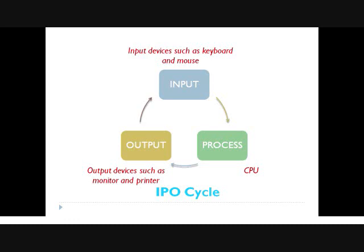For example, suppose I say '2 plus 2' — that is the input. You hear it through your ears, so the ear is your input device. It goes to your brain where you calculate it, so the brain is the CPU. You then speak the answer from your mouth, so the mouth is your output device. You take the input, process it in your mind, and give the output. In a similar way, your computer works on the IPO cycle.